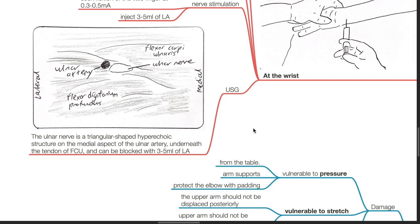Ultrasound guidance: The ulnar nerve is a triangular shaped hyperechoic structure on the medial aspect of the ulnar artery underneath the tendon of the FCU and can be blocked with 3 to 5 mL of local anesthetic.